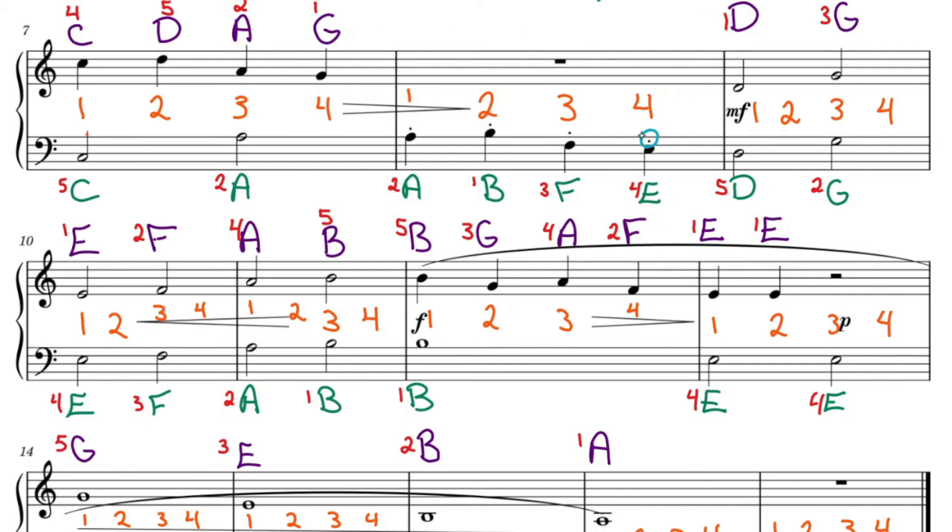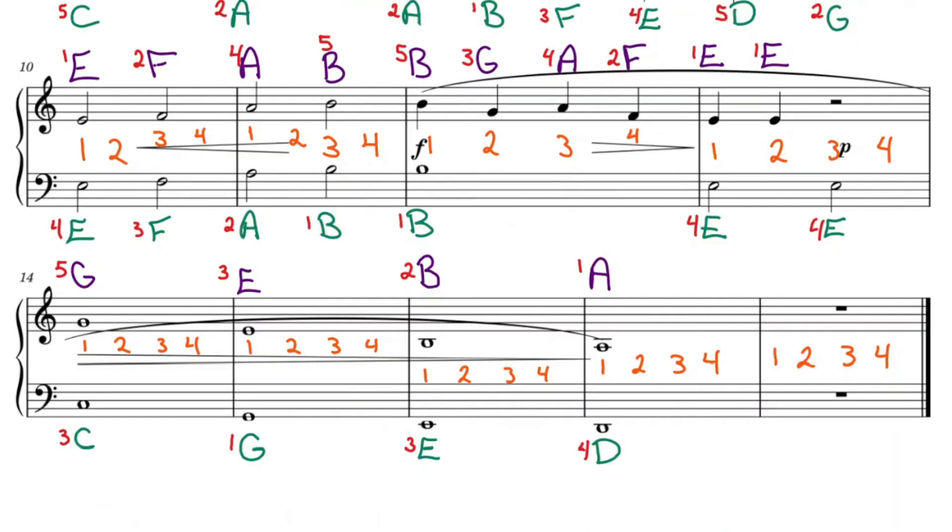We also have these dots. These are called staccatos. Pretend that you're touching something very, very hot, and you want to take your fingers away from it as quick as possible. Another MF, mezzo forte, medium loud. A nice crescendo, getting louder. Forte, loud. To create the loud sound on piano, push harder down on the keys. And to create that soft piano sound, press lightly on the keys.